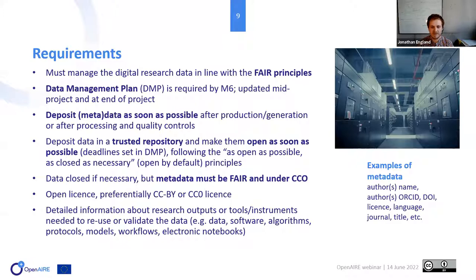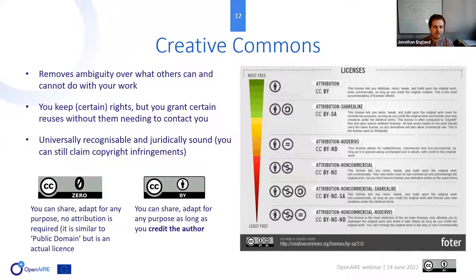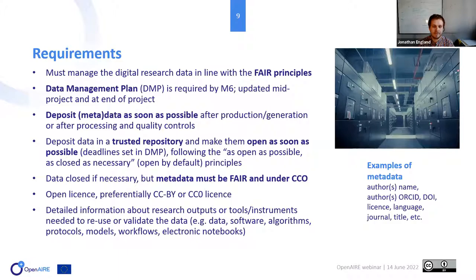Regarding licenses: metadata must be under CC0, which means no attribution is required from users. CC BY, which applies to publications, is an open license that allows sharing and adaptation but requires crediting the authors. You also need to provide detailed information about any other outputs — tools, instruments, software, algorithms, or protocols — needed by others to open, reuse, or validate the data. Another researcher should be able to open your data and know what to do without contacting you.